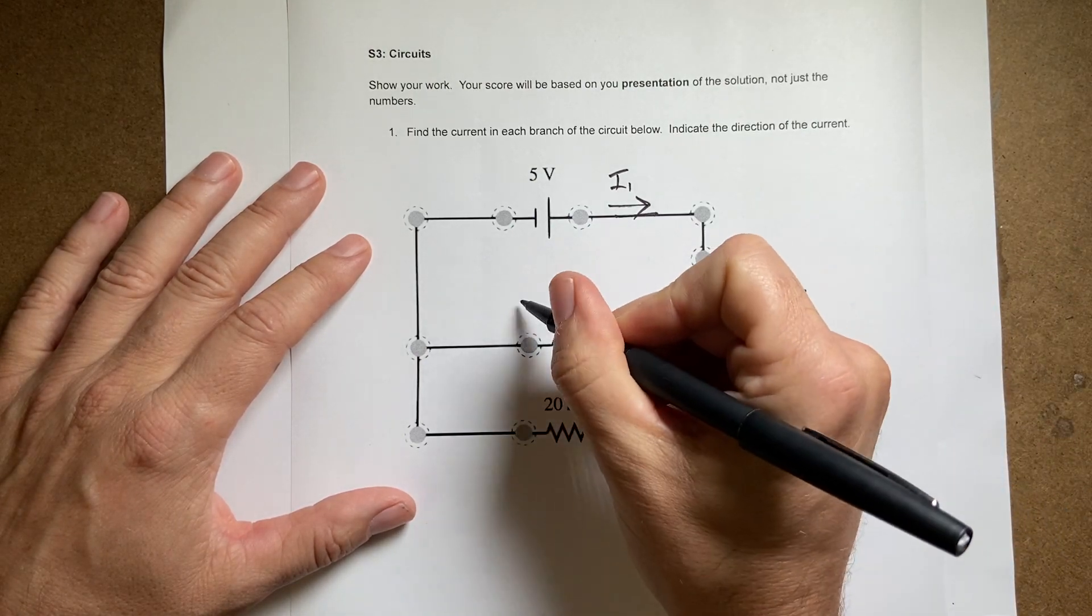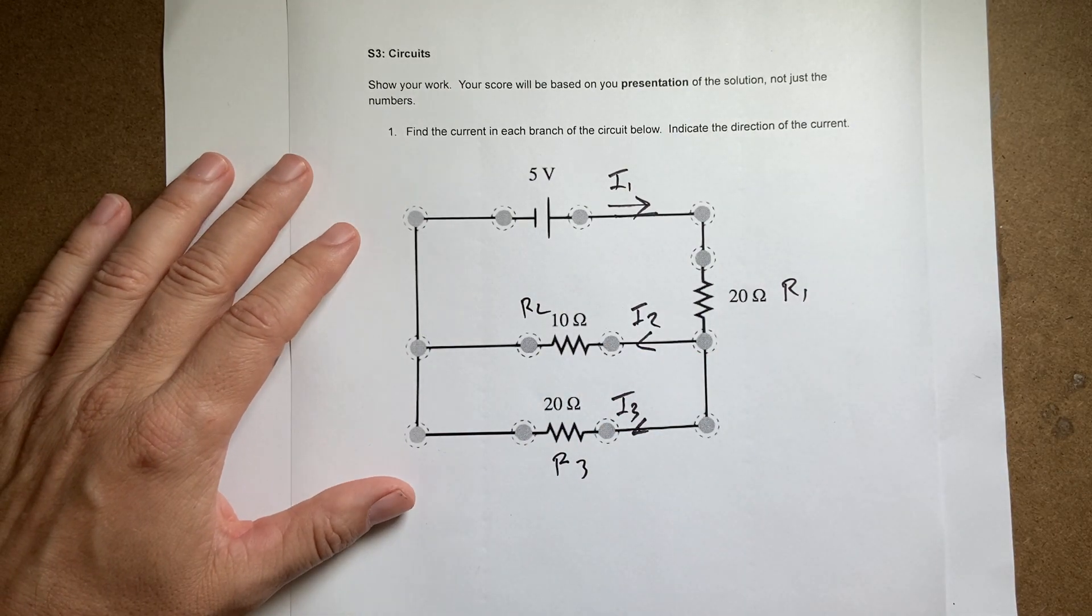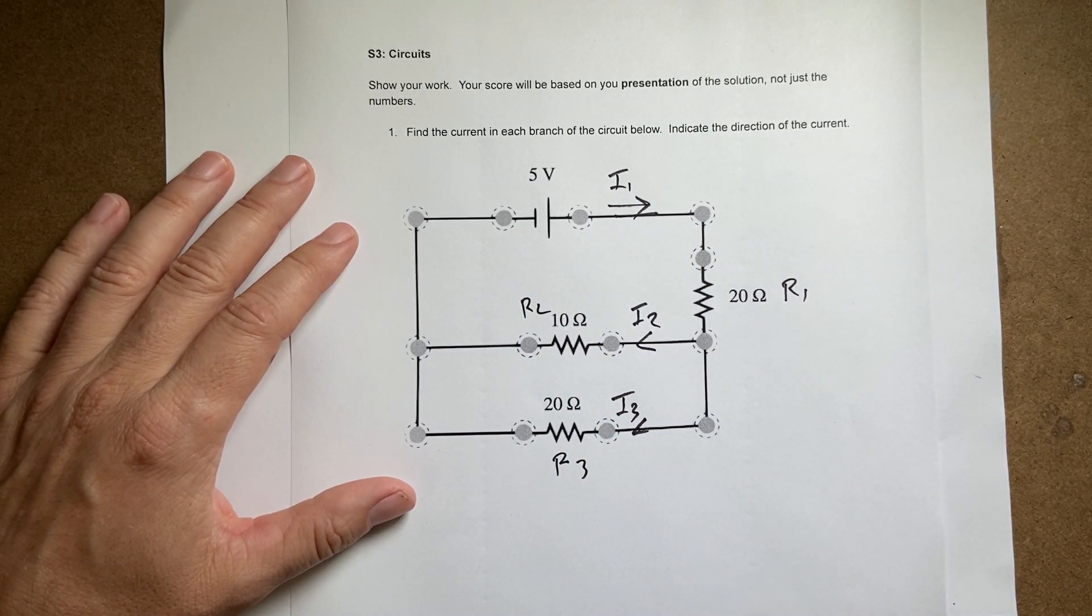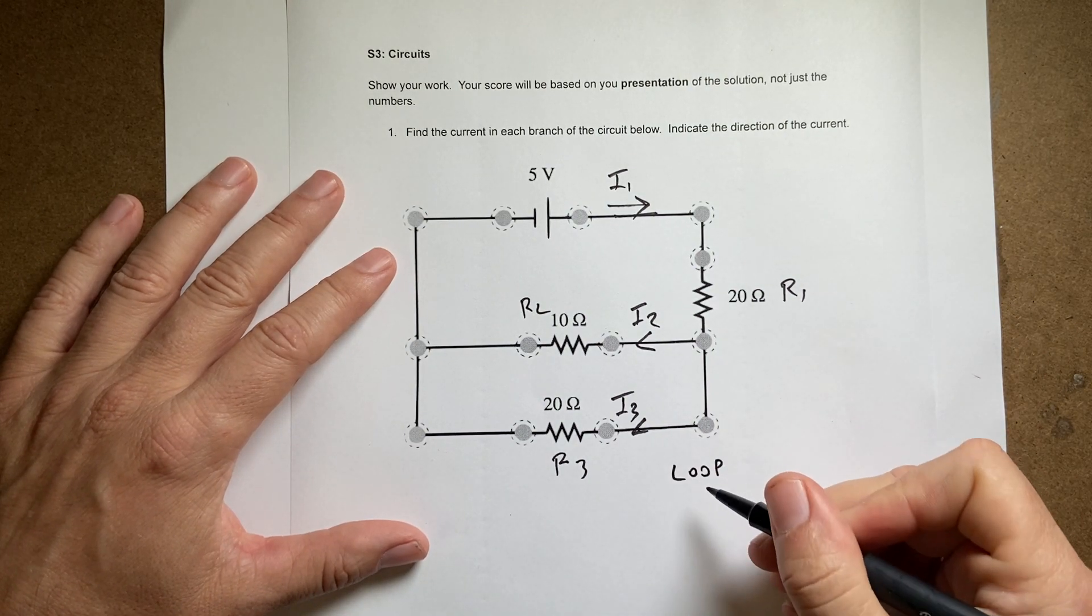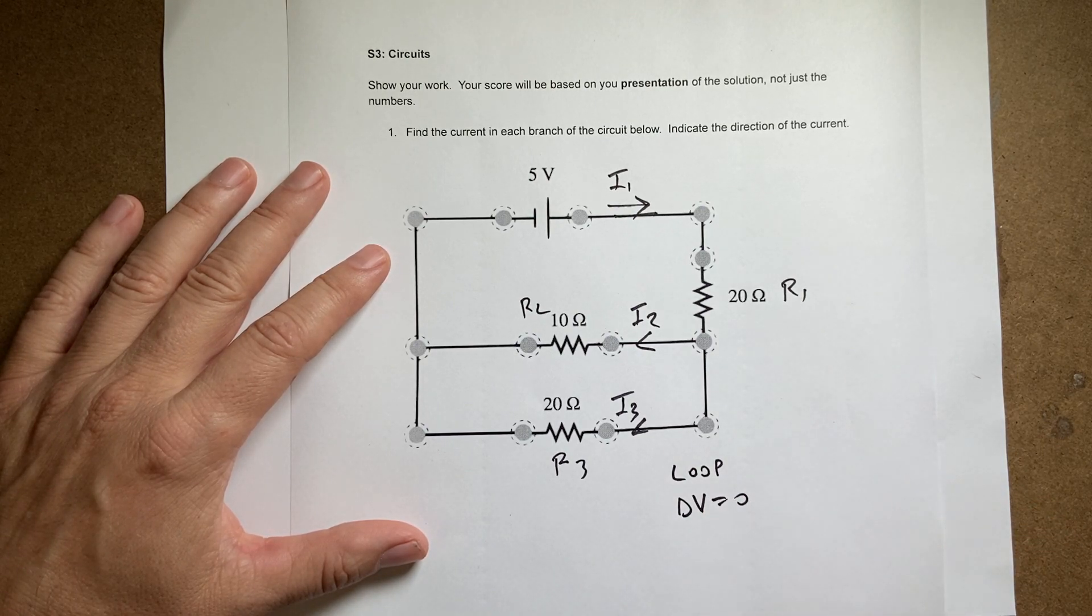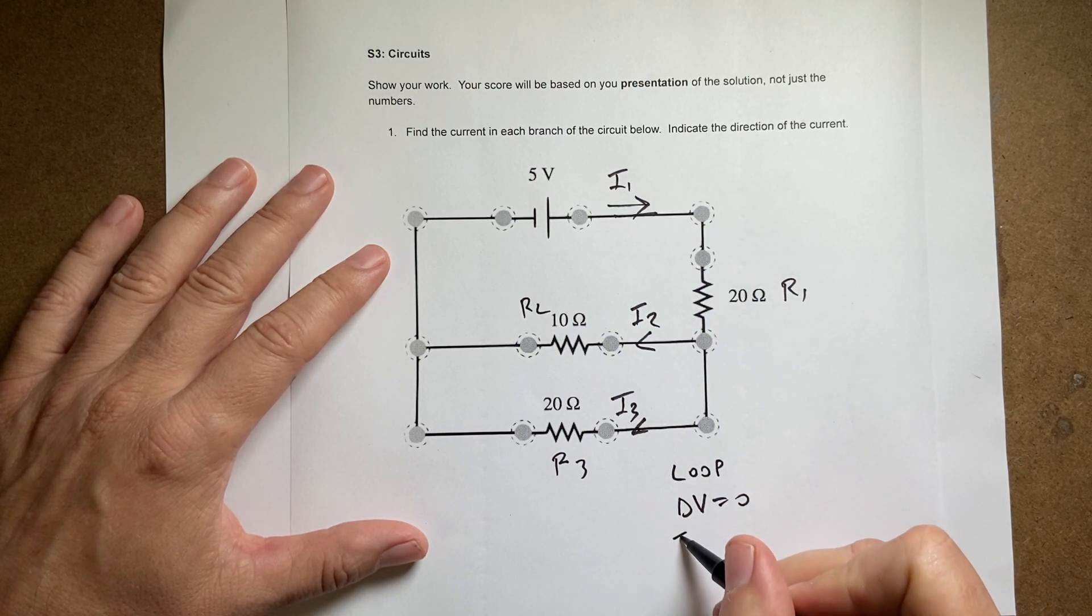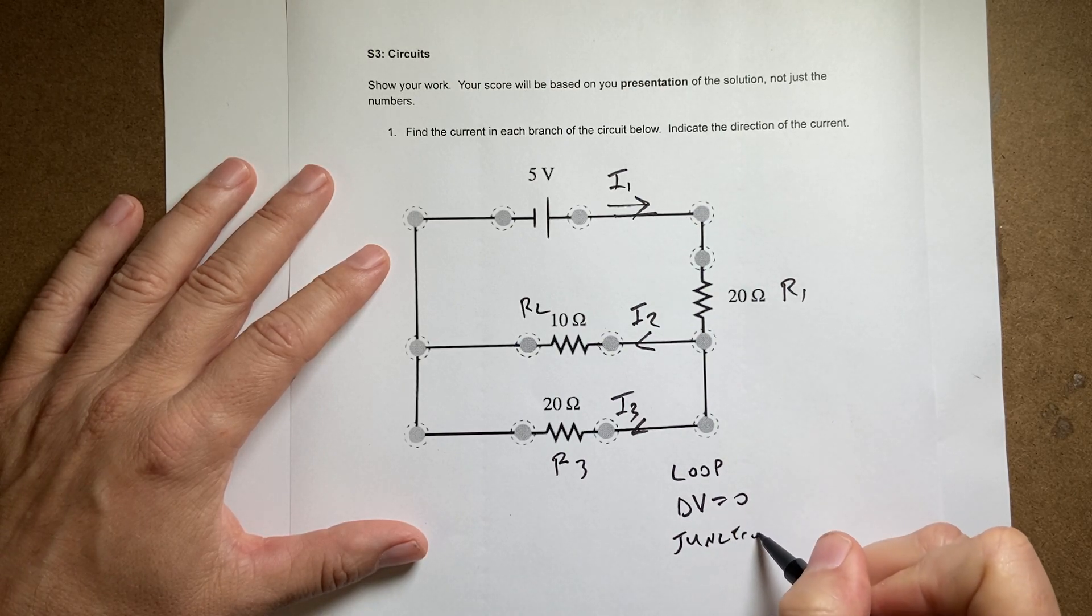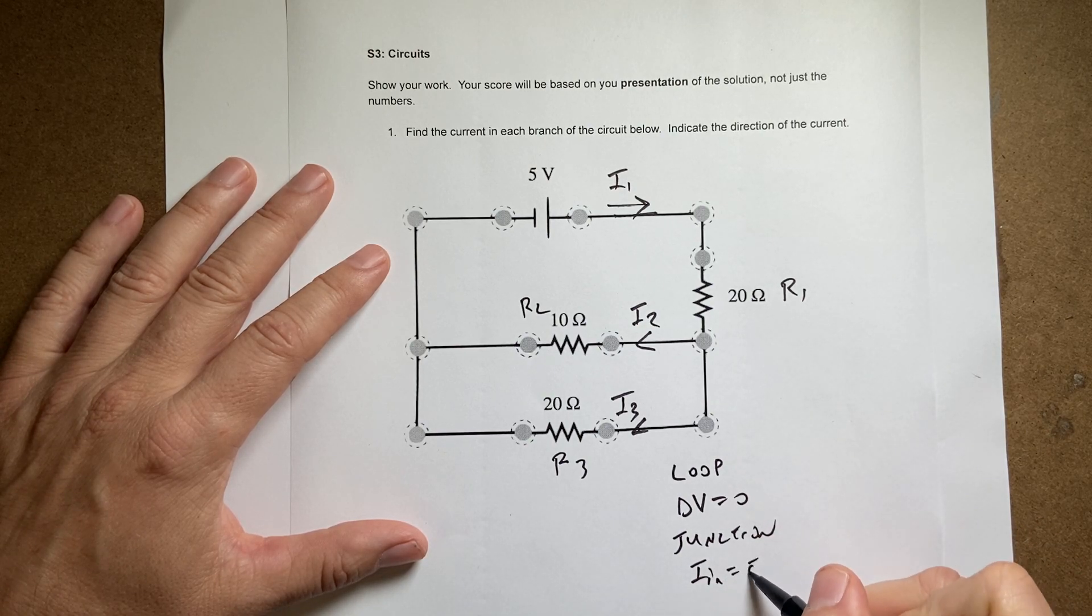I didn't call this R1, R2, R3 but we'll just use 10, 20, and 20. It doesn't really matter. So now we have two rules that we can apply. The first is the loop rule. The loop rule says that the change in electric potential around any loop is 0 and then the junction rule says that the current coming in equals the current coming out. I in equals I out.